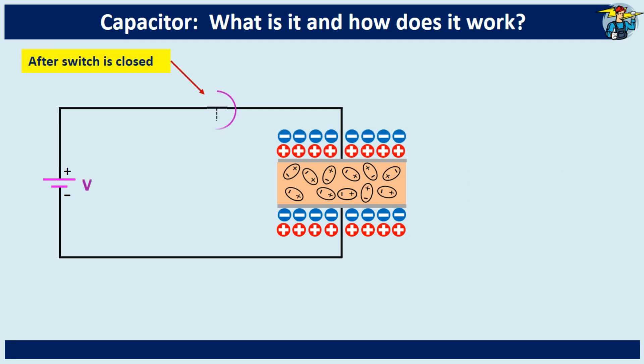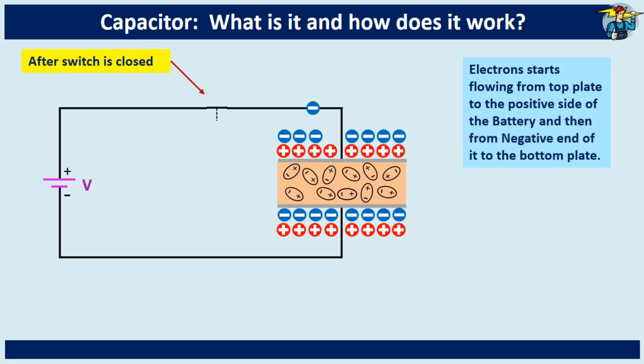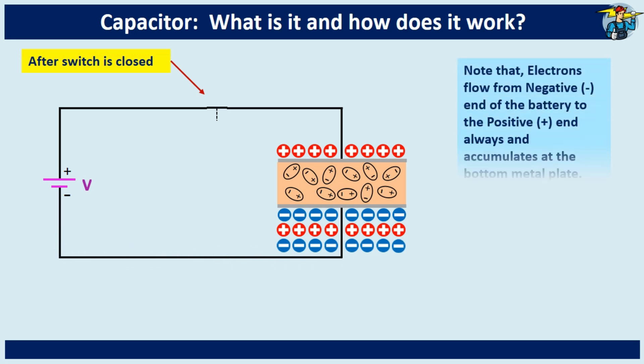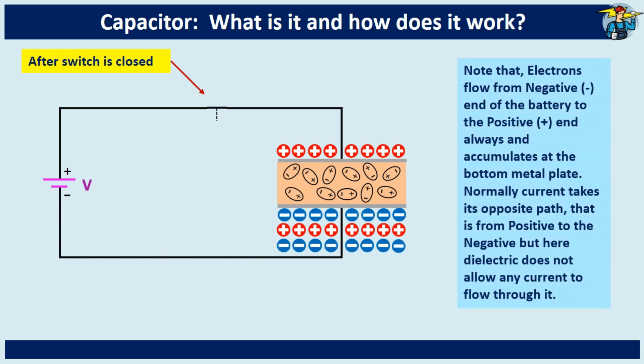When switch is closed, electrons start to flow from the top plate to positive side of the battery, and also electrons from negative side of the battery continue to flow and accumulate at the bottom plate. Normally current takes opposite path of the electrons, that is from positive end to the negative end. Also keep in mind, dielectric does not allow any current to flow through it.